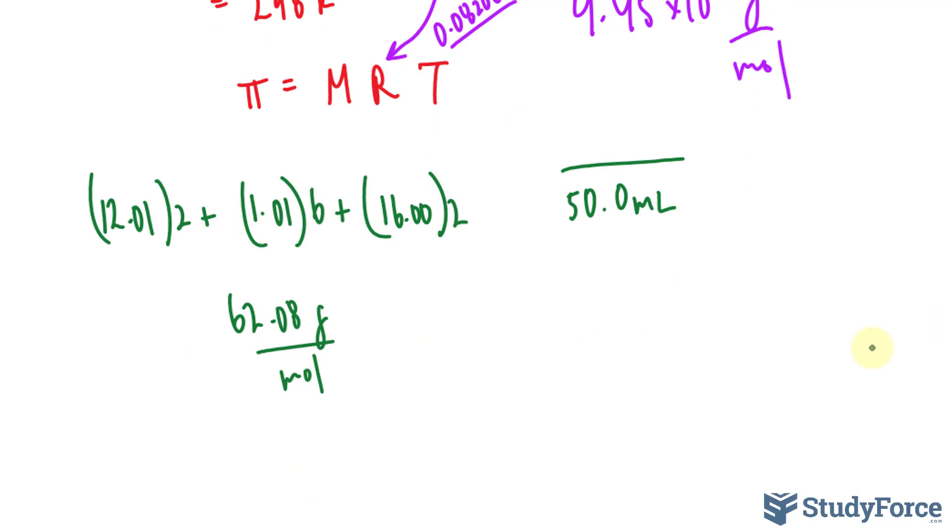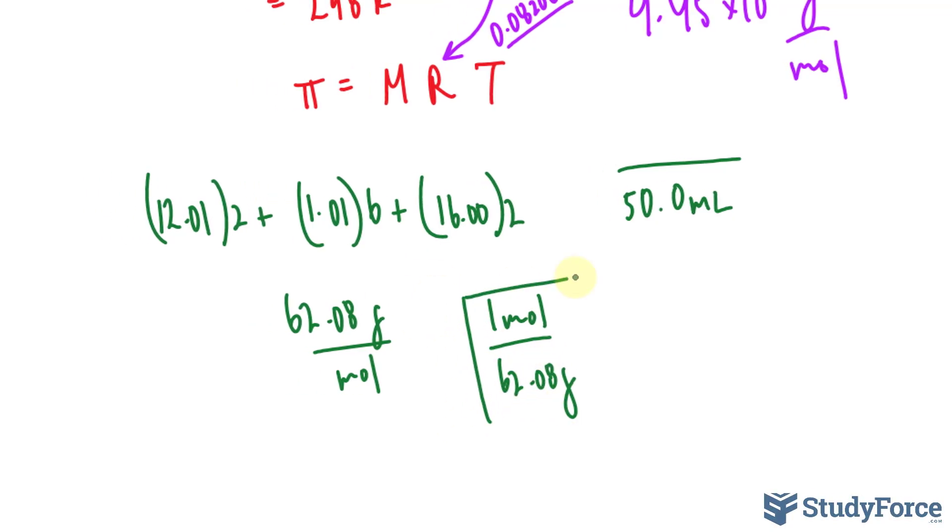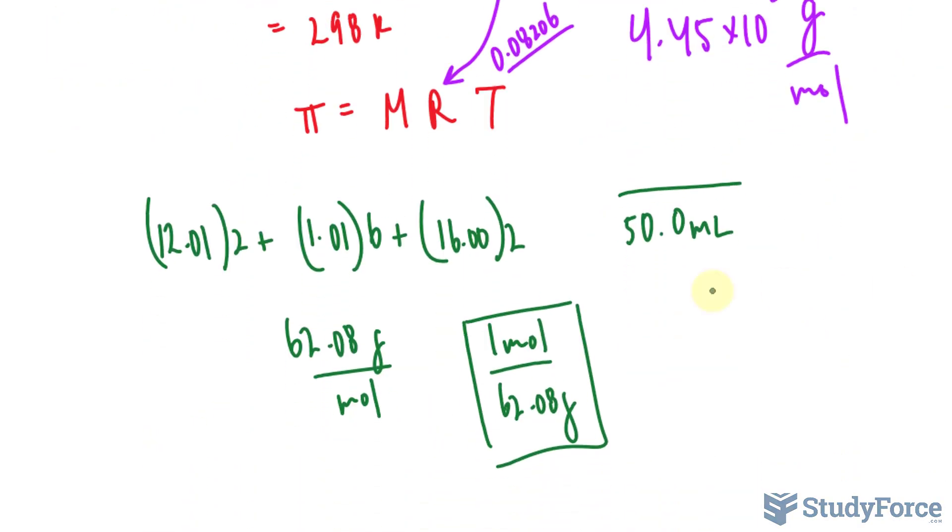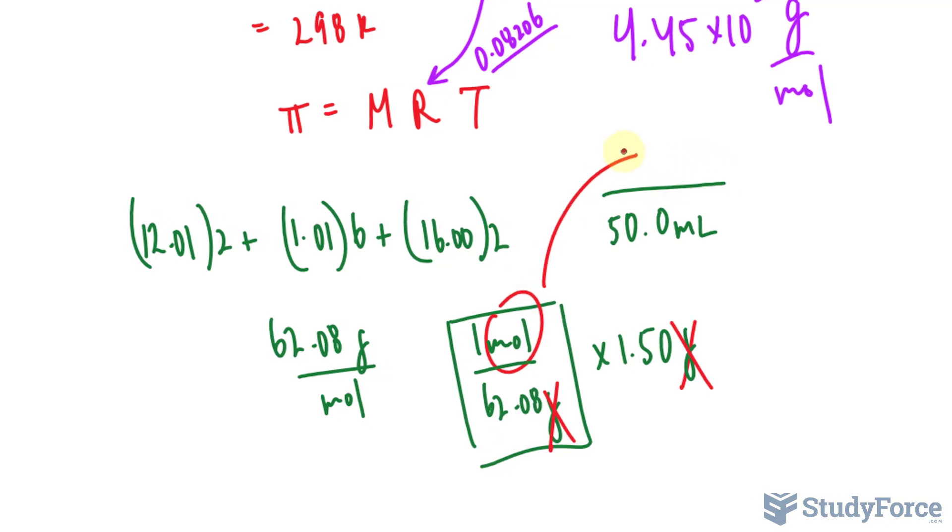Notice that this ratio has grams over mole, although we can write it as 1 mole per 62.08 grams. The reason why I want to write it like this is so that when I multiply it to 1.50 grams, this gram unit and this gram unit will cancel out, leaving us with the moles of ethylene glycol.